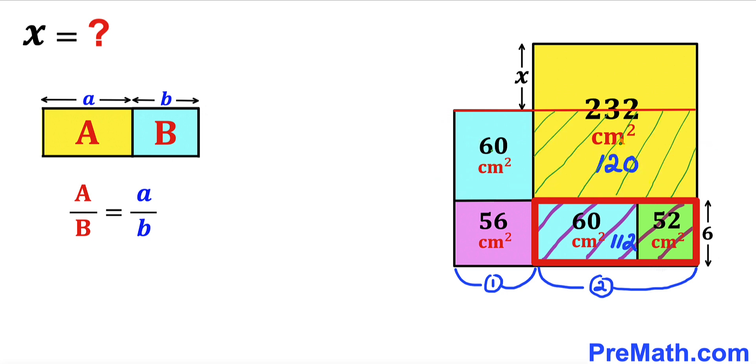So therefore this part of this yellow rectangle 120 centimeter square and we know that the whole area for this yellow rectangle is 232. So therefore this part has area 232 minus 120 that is going to give us 112.